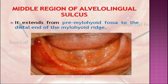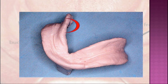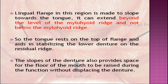The middle region of the alveolingual sulcus extends from the premylohyoid fossa to the distal end of the mylohyoid ridge. In this picture you can see clearly how it looks. The lingual flange in this region is made to slope towards the tongue. It can extend beyond the level of the mylohyoid ridge but not below it, so the tongue rests on the top of the flange.